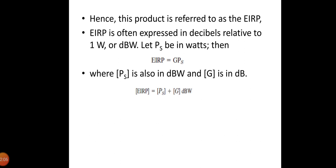EIRP is often expressed in decibels relative to 1 watt, or dBW. Let P_s be in watts, then EIRP equals G times P_s, where P_s is in dBW and G is in dB. Therefore the modulus of EIRP is given as P_s plus G in dBW.